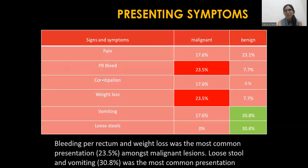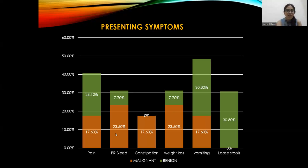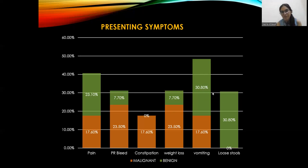The majority of patients with malignant lesions presented with per rectal bleeding, while in benign conditions the most common presentations were loose stool and pain in abdomen. Per rectal bleeding was present in 23.5% of malignant bowel lesion cases, and in benign bowel lesions, the majority presented with vomiting and loose stool at 30.8%.